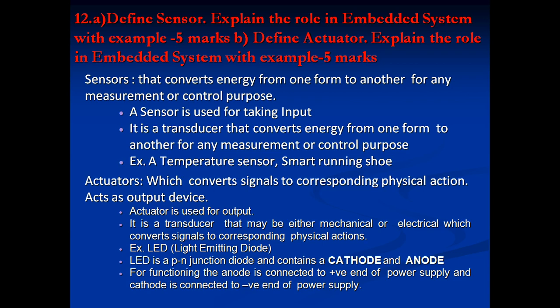Next questions, asked for 5 marks each: define sensor and explain the role of sensors in embedded systems with an example; define actuator and explain the role of actuators in embedded systems with an example. Sensors convert energy from one form to another for any measurement or control purpose. They are used as inputs to take data from the real environment. For example, a temperature sensor senses outside temperature so the system can adjust cooling in a room.